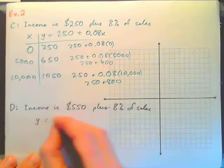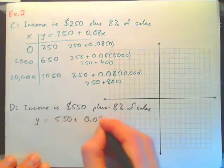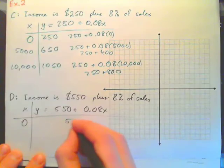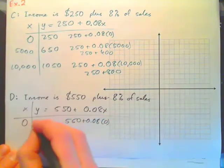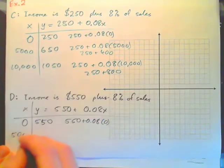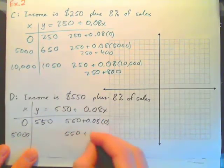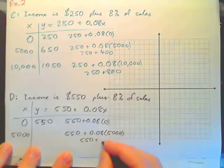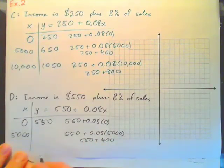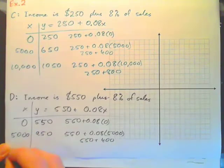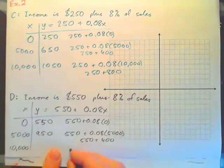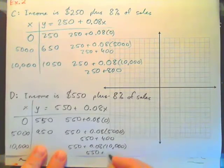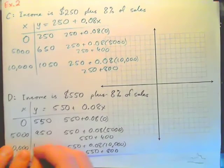Whereas this one, the income is $550 plus 0.08 times number of sales X. And if I just plug some numbers in there, if I sell nothing I get $550 plus 0.08 times 0, I get $550. If I sell $5,000 worth of product I get $550 plus 0.08 times $5,000, which is $550 plus $400, so that is $950. And if I sell $10,000 worth of product I get $550 plus 0.08 times $10,000, so that's $550 plus $800, so I get $1,350.